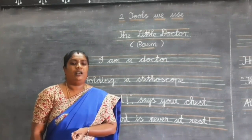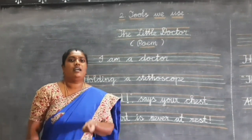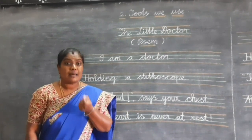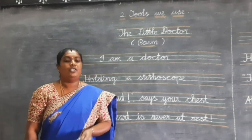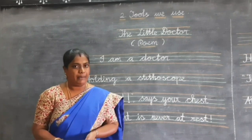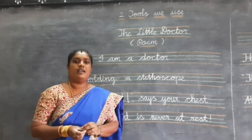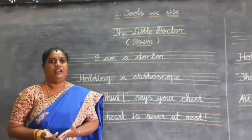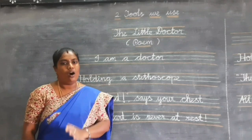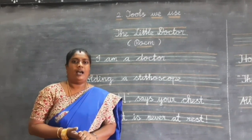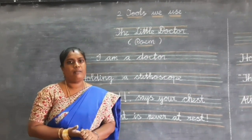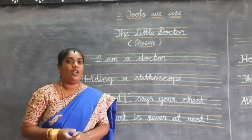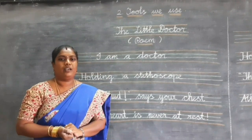Thermometer is the instrument which is used to check temperature. Sugar checking apparatus is used to check sugar level, whether it is high or low. And then injection — the main thing. Let us start the poem.